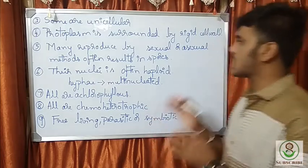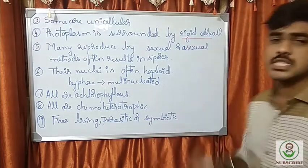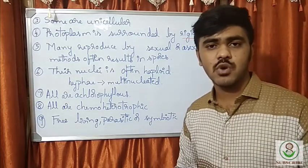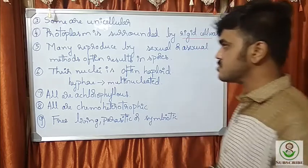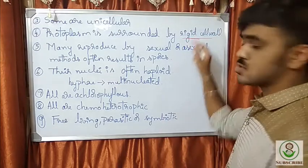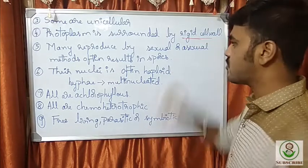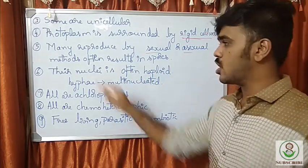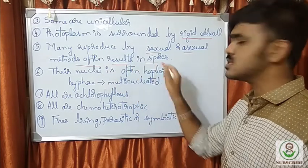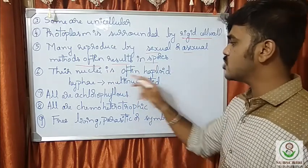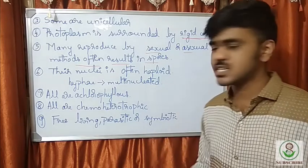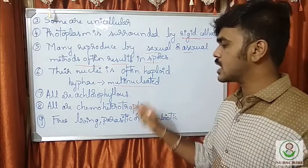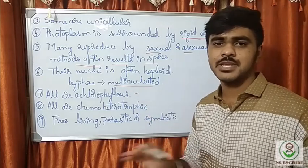The protoplasm is surrounded by a rigid cell wall. The rigid cell wall component is chitin — this is a very special component responsible for the rigidity of the cell wall. Many reproduce by sexual or asexual methods, and both methods often result in spores. The nuclei are often haploid, and the hyphae that contain the filaments are usually multi-nucleated.